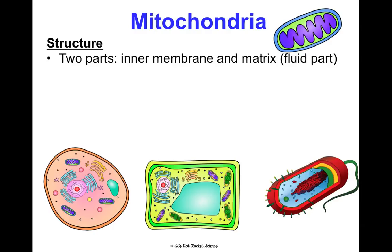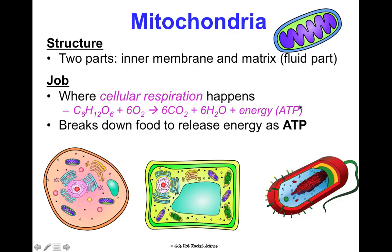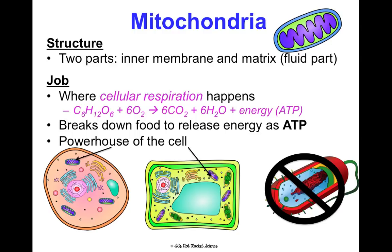Mitochondria have two parts: an inner membrane and a matrix, which is the fluid part. This is where cellular respiration happens. The chemical equation is: glucose (C6H12O6) plus oxygen (O2) produces carbon dioxide, water, and energy in the form of ATP. It's basically breaking down the food you eat — carbohydrates — to release energy as ATP for your cell to use. We call it the powerhouse of the cell. It's found in both animal and plant cells, but not in prokaryotic cells.